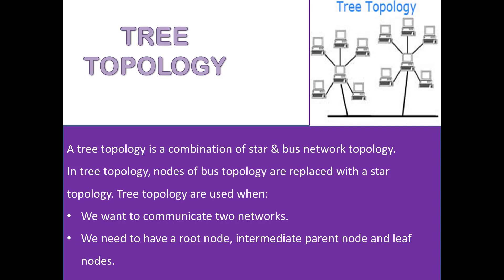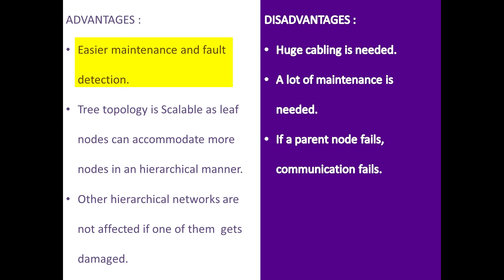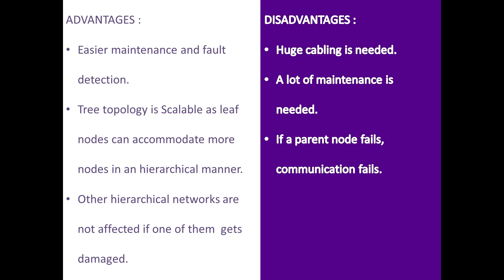In tree topology there is one root, its intermediate parent nodes, and their children called leaf nodes. Advantages: it is easier to maintain and fault detection is easier. Tree topology is scalable as leaf nodes can accommodate more nodes in a hierarchical manner. Other hierarchical networks are not affected if one gets damaged. Disadvantages: a huge amount of cabling is required, a lot of maintenance is required, and if a parent node fails, the communication still fails.